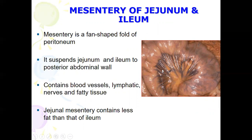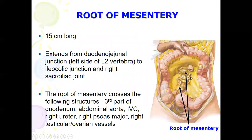The mesentery is a fan-shaped fold of peritoneum that suspends the jejunum and ileum to the posterior abdominal wall. Inside the mesentery we have blood vessels, lymphatic vessels, nerves, and fatty tissue — that is why the mesentery is yellowish. The jejunum mesentery contains less fat compared to the ileum. The root of the mesentery is about 15 centimeters long, extending from the duodenojejunal junction at L2 to the ileocolic junction at the right sacroiliac junction.